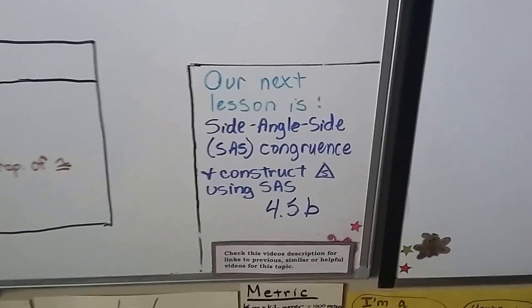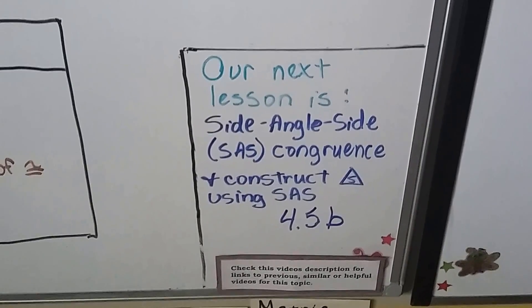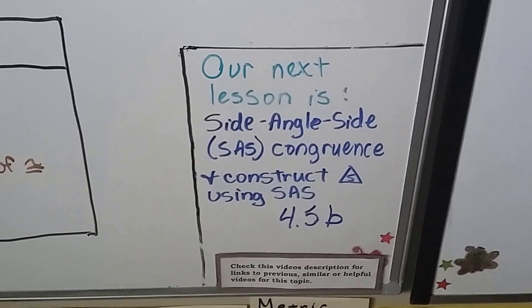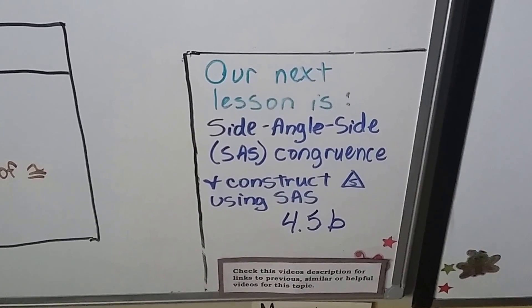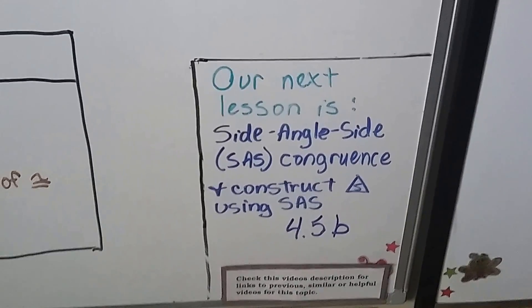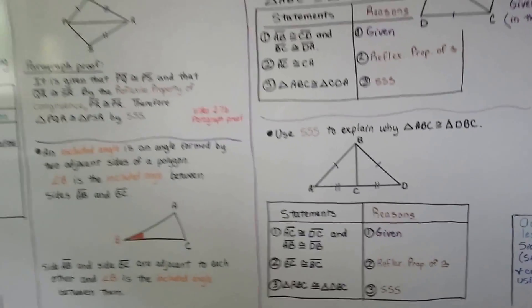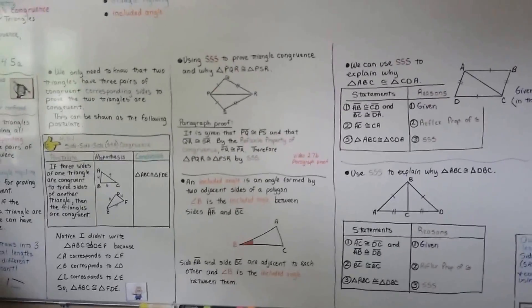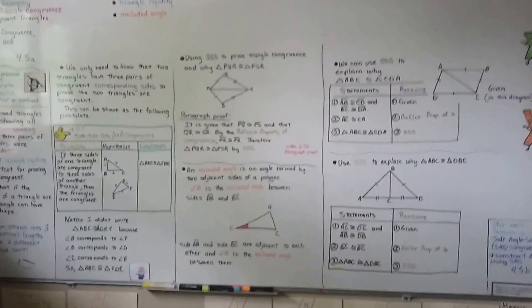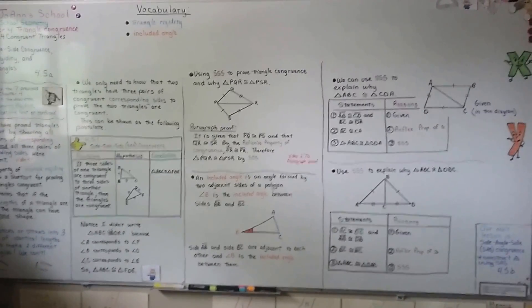So our next lesson we're going to talk about side angle side — that's SAS congruence. And we're going to construct triangles using SAS. That's going to be lesson 4.5B, so we're going to continue on with lesson 4.5 in the next video. I hope this made sense to you. Hit the like button if it was helpful, and I'll see you next time. Bye!